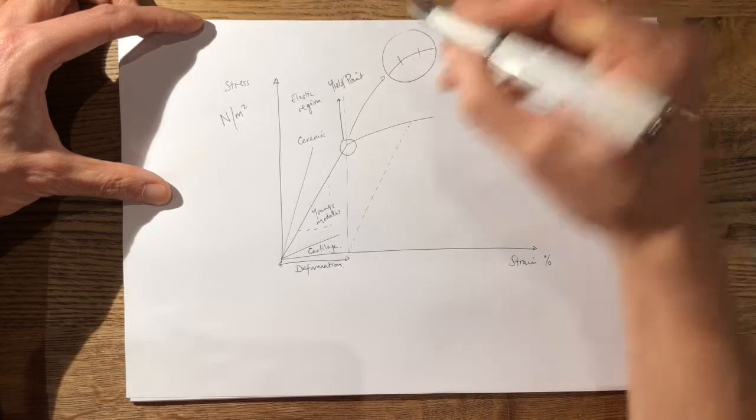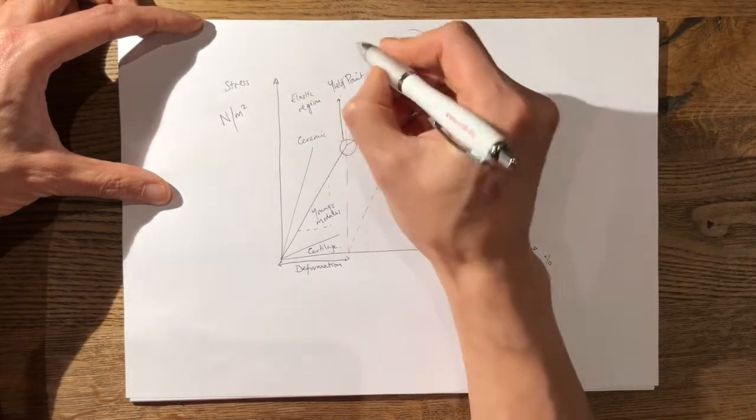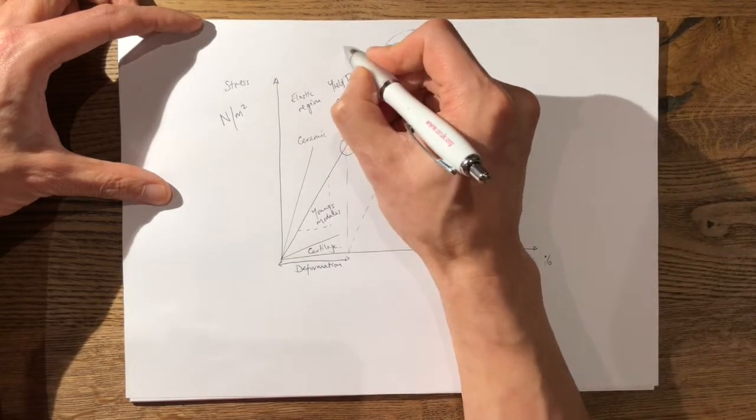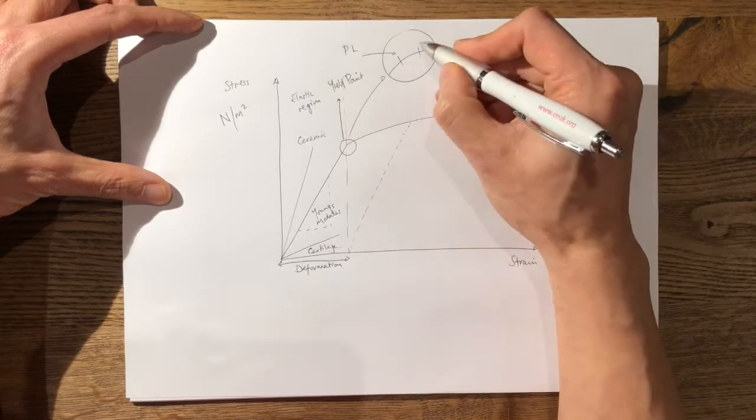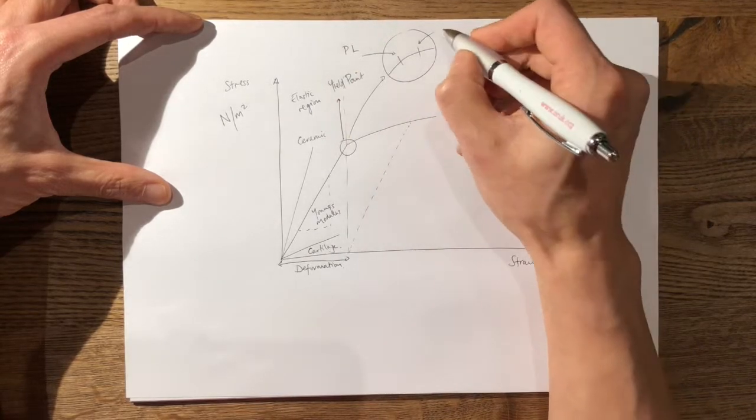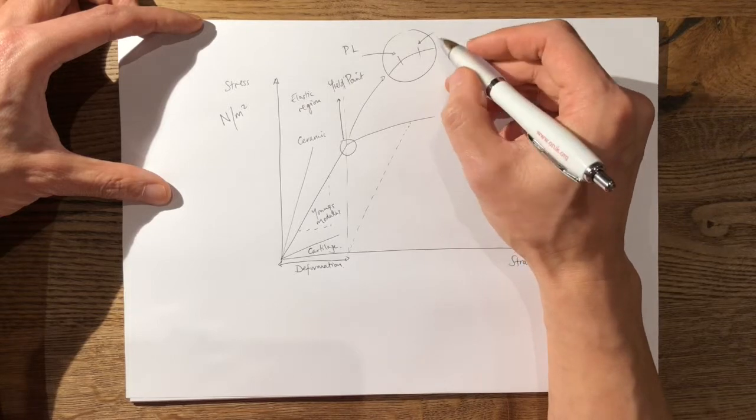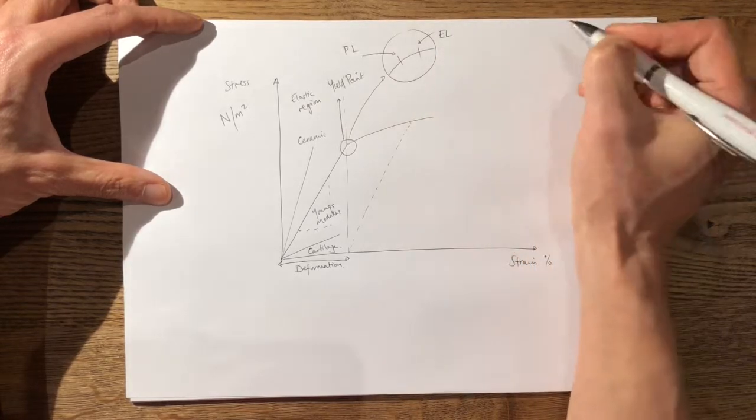The first area is known as the limit of proportionality or the proportional limit. The second point of note is the limit of elasticity or the elastic limit.